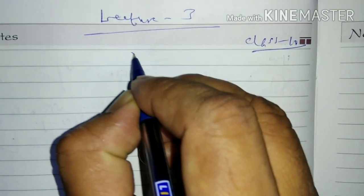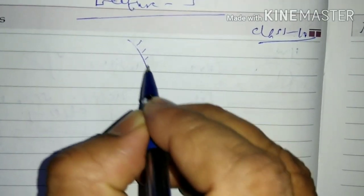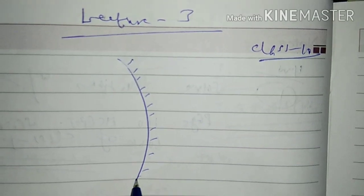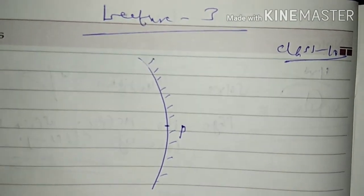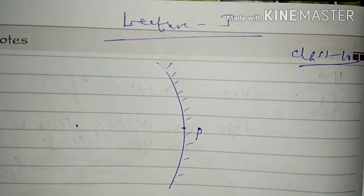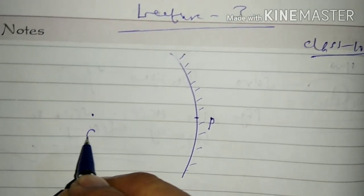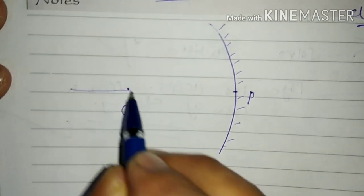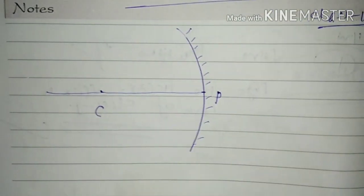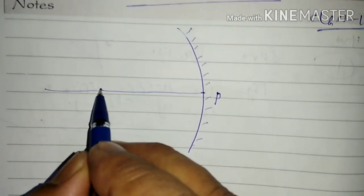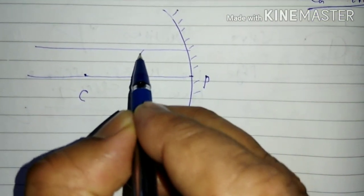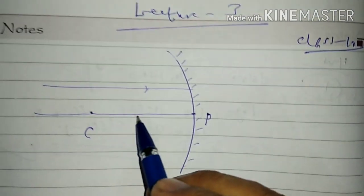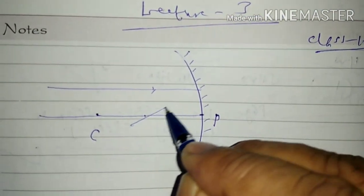Once again, suppose this is a spherical mirror. The midpoint of a spherical mirror is called the pole, and the center of the sphere of which the given mirror is a part is called the center of curvature. The line joining the center of curvature to the pole is called the principal axis. Rays of light parallel to the principal axis, after reflection, meet at a point on the principal axis, and this point is called the focus or principal focus, in the case of a concave mirror.